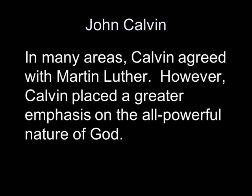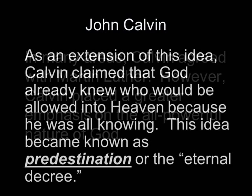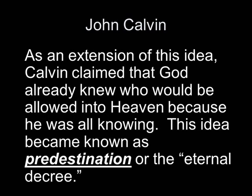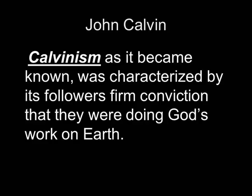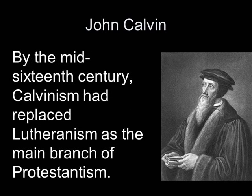In many areas, Calvin and Luther agreed. However, Calvin placed a greater emphasis on the all-powerful nature of God. As an extension of this idea, Calvin claimed that God already knew who would be allowed into heaven because he was all-knowing. This idea became known as predestination, or the eternal decree. Calvinism, as it became known, was characterized by its followers' firm conviction that they were doing God's work here on earth. By the mid-16th century, Calvinism had replaced Lutheranism as the main branch of Protestantism.